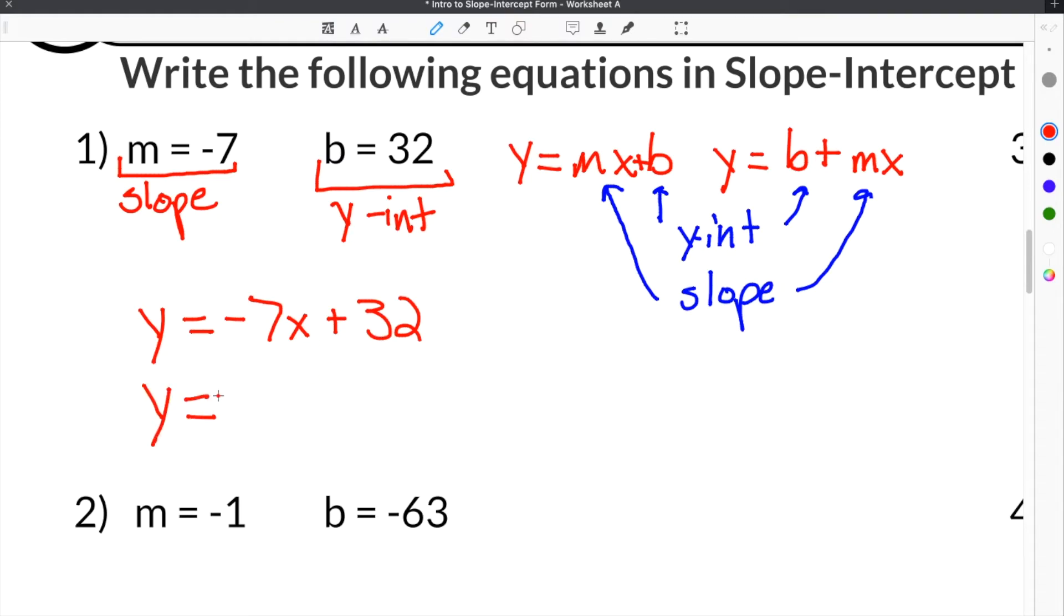It's important to note you could also write it as Y equals 32 minus 7X, so that our B comes first, so this would be the B this time, and then this would be the M. But whatever you do, you have to include the negative with the 7 because our slope is negative 7. So either way you want to write it is correct.